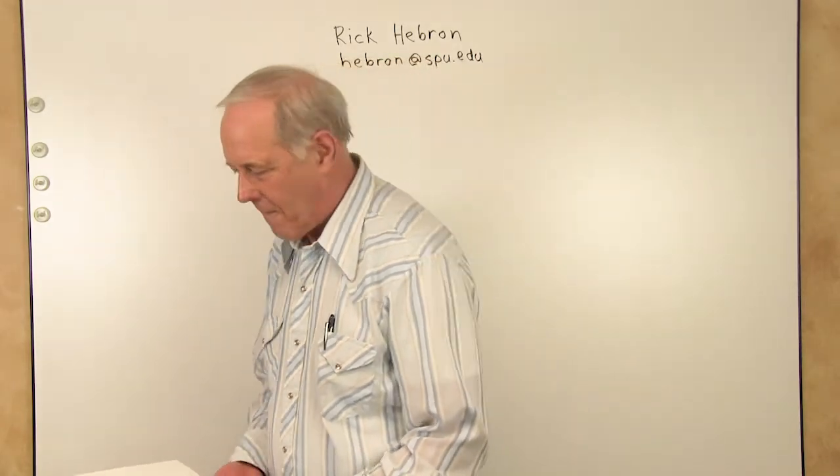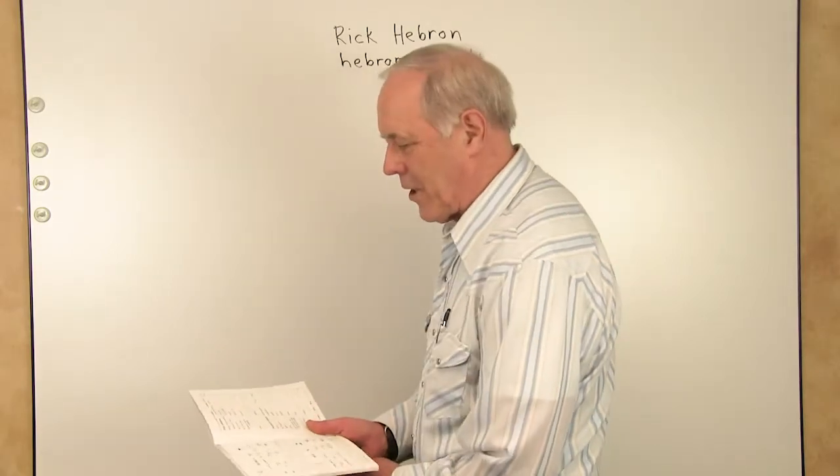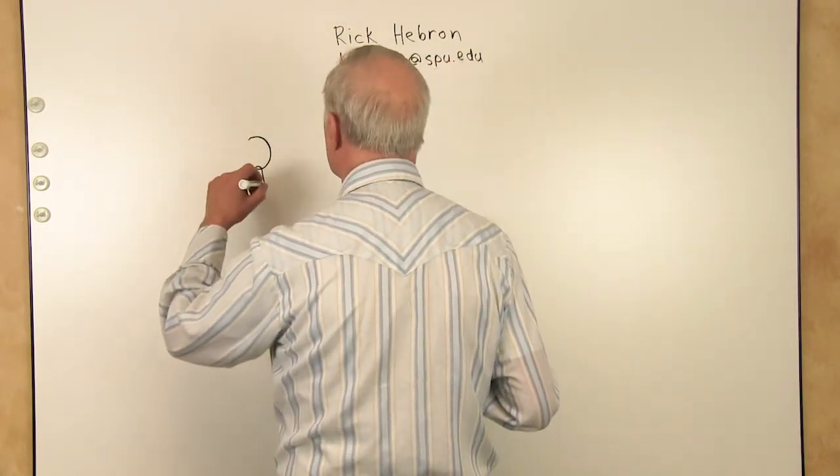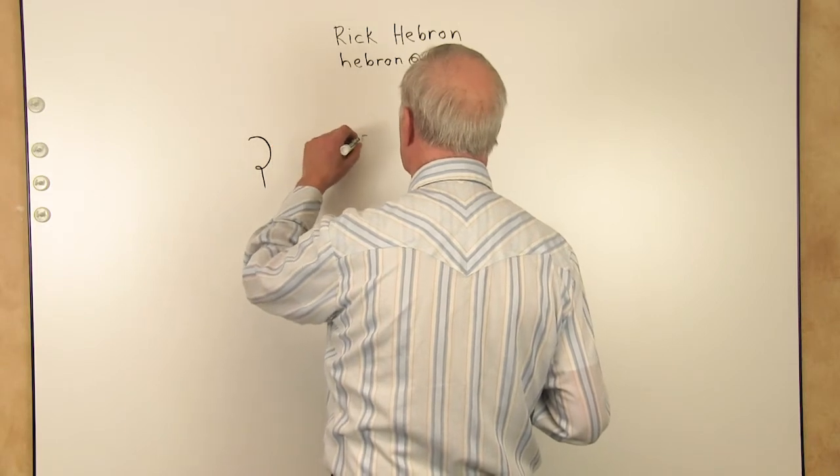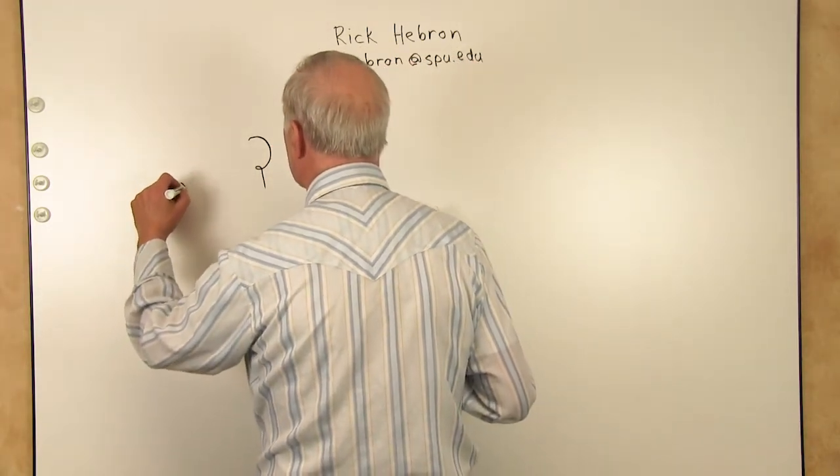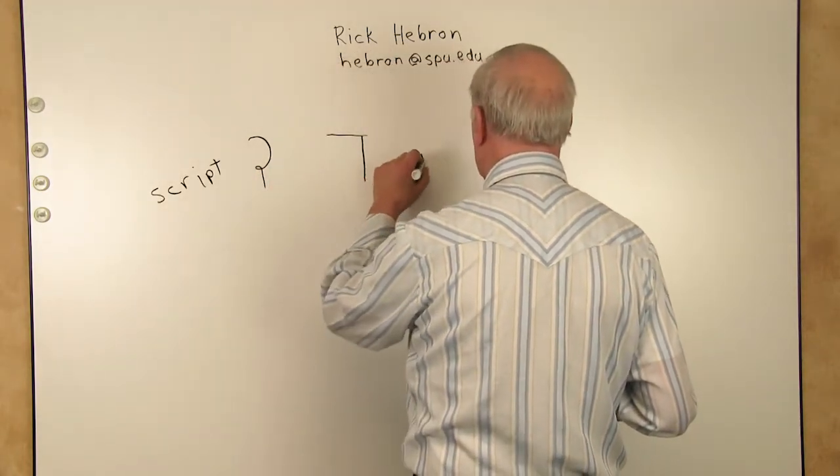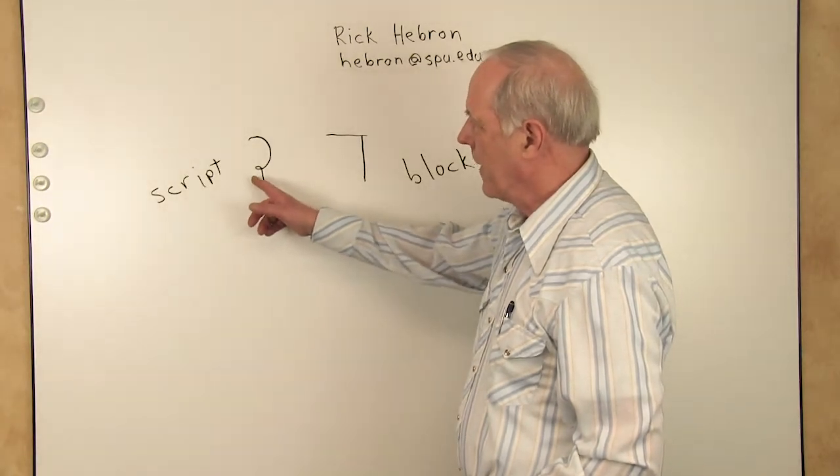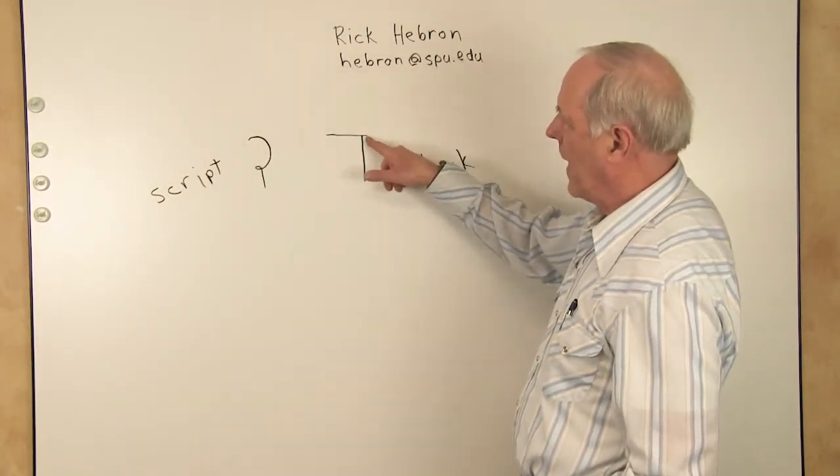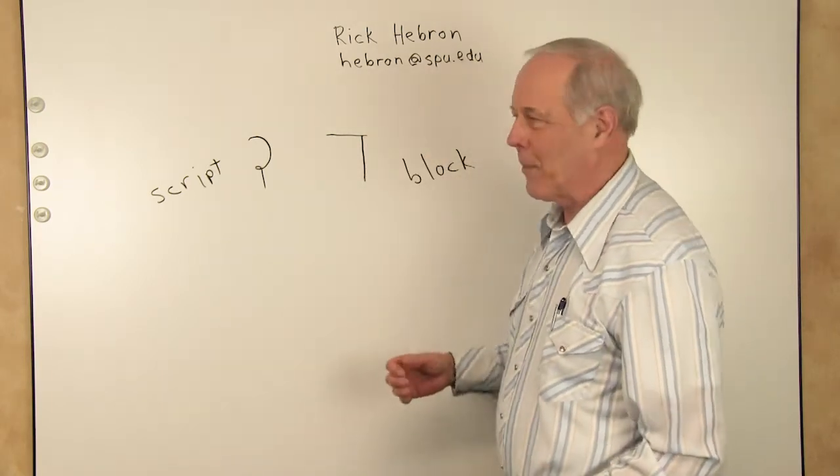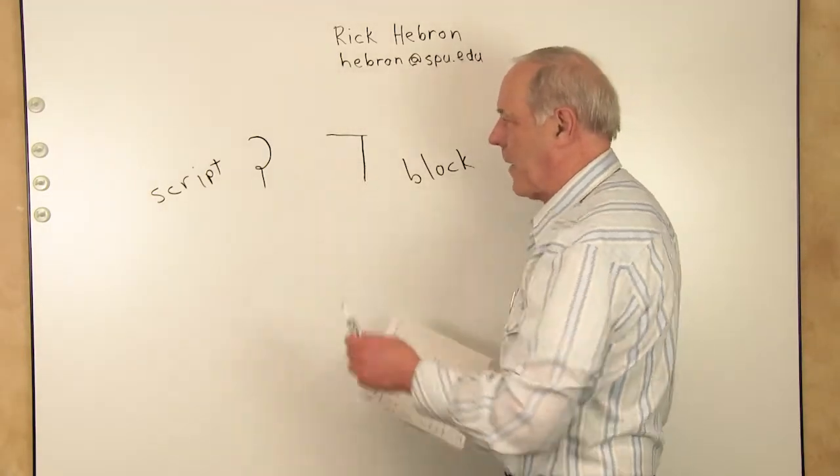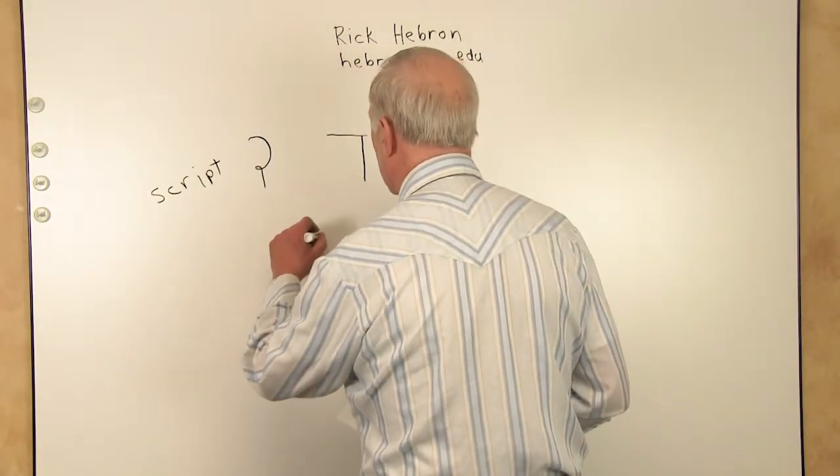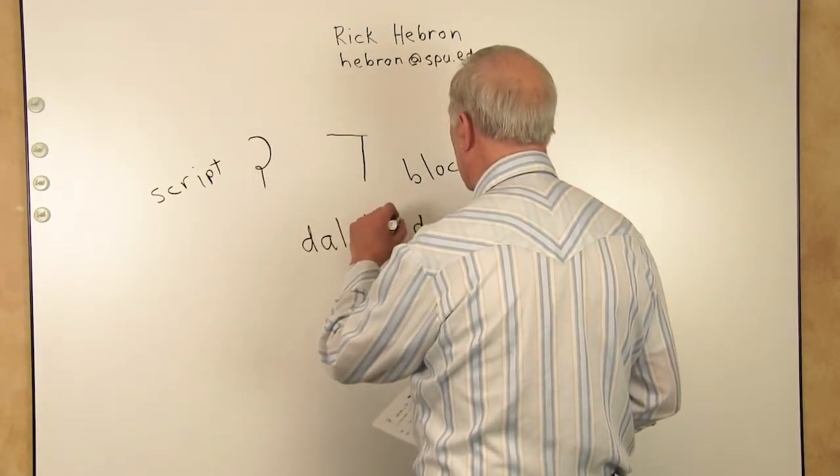So with lesson two, we will plunge ahead boldly and learn a letter called Dalet. You can have a little loop in your Dalet, in a script Dalet. The block Dalet has a little bit of an overlap here for structural purposes, so it won't fall apart. Remember to do that if you happen to be writing block Hebrew. The Dalet goes D.